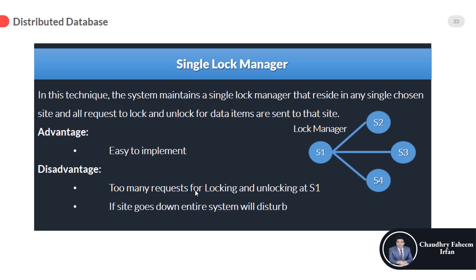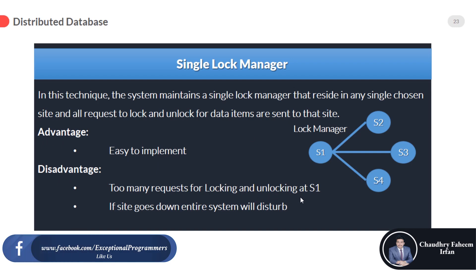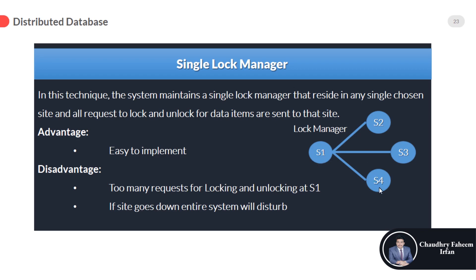The disadvantages of the single lock manager are: too many requests for locking and unlocking accumulate at S1, because S4, S3, and S2 all send their requests there. Additionally, if S1 goes down, the entire system is disturbed and work stops because there is no lock manager available. Every site must request that single site for all locking operations.